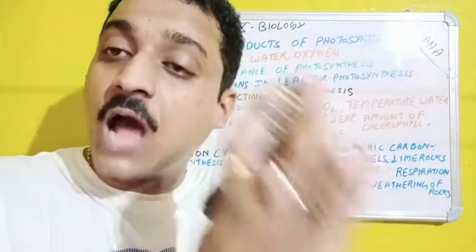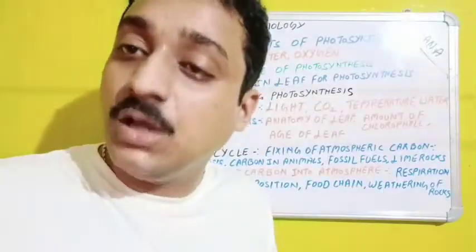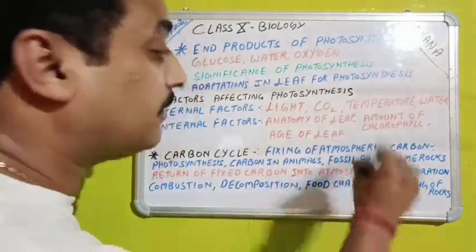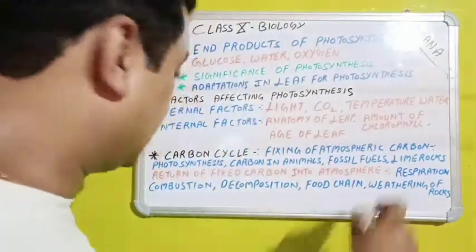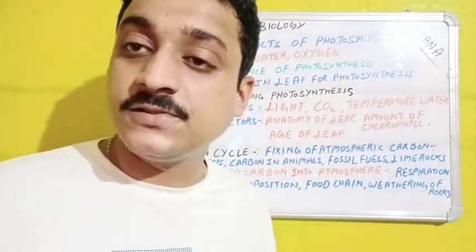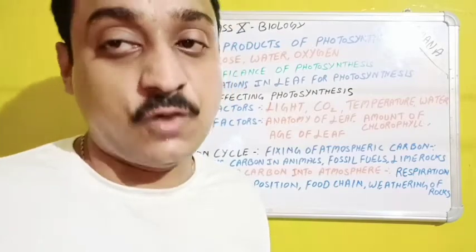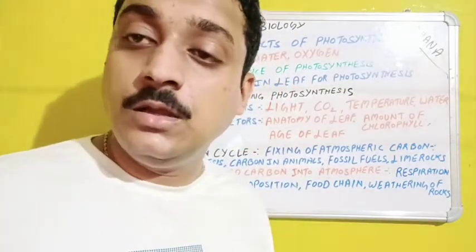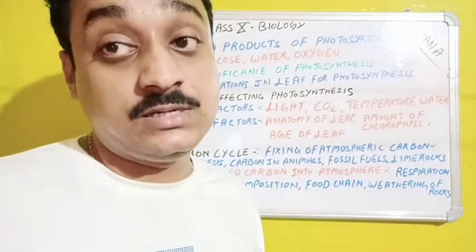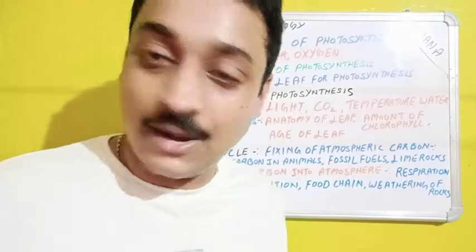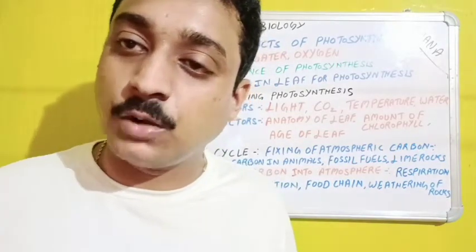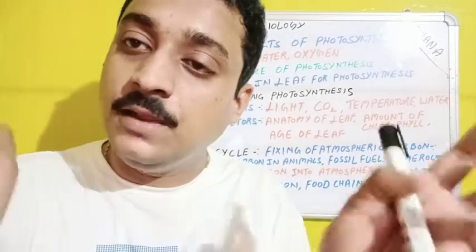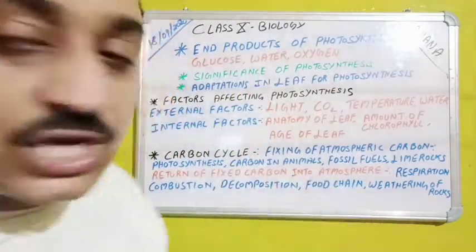The return of fixed carbon into the atmosphere includes: respiration (food burns in the presence of oxygen and releases CO2 back into the environment), combustion (burning in the presence of oxygen liberates CO2), and decomposition (when living organisms die, microorganisms feed on them and the carbon is released back into the atmosphere or environment). Also, the food chain transfers carbon from one organism to another.